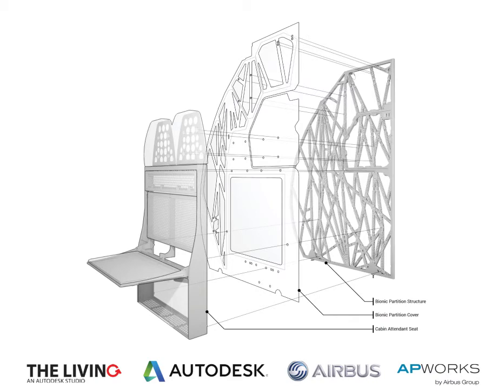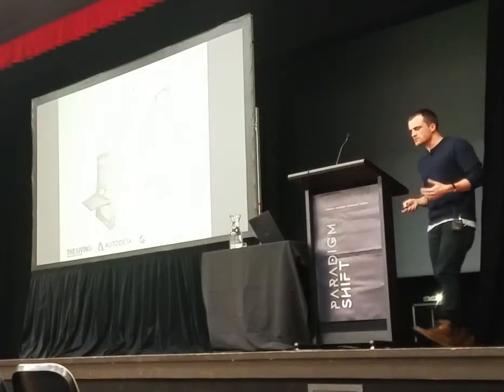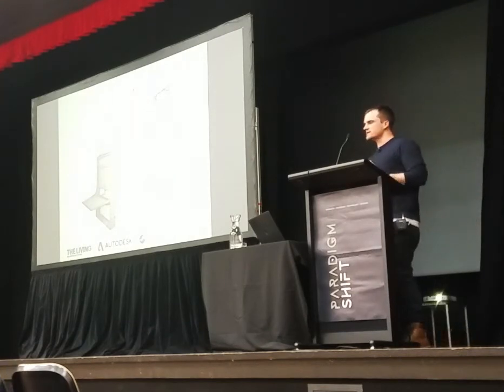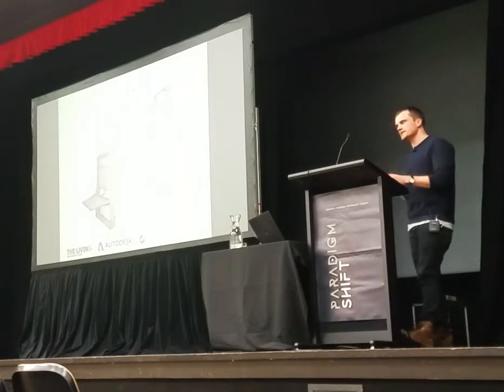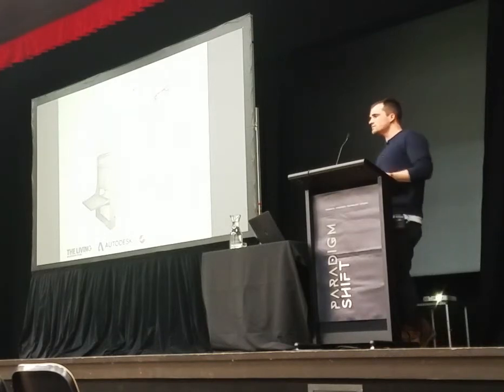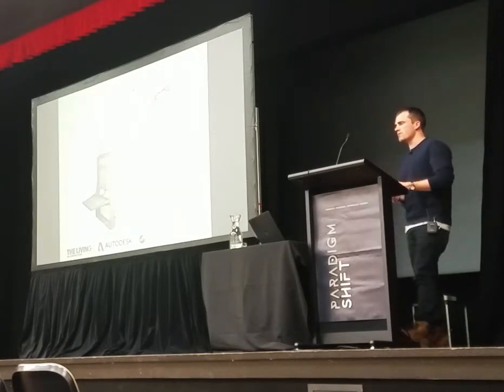The partition wall is anchored into the substructure of the aircraft — connected directly to the fuselage and the seat rails below — but it has to fully support the cabin attendant seat, where flight attendants sit during takeoff and landing. This seat is not attached to the substructure; it's only attached to the partition. So the partition is the only thing carrying the full weight of two cabin attendants and the seat back into the substructure. It's a pretty tough structural problem. The new panels Airbus had been getting from suppliers were heavy and expensive. Our goal: create a partition wall with the same structural performance but half the weight.